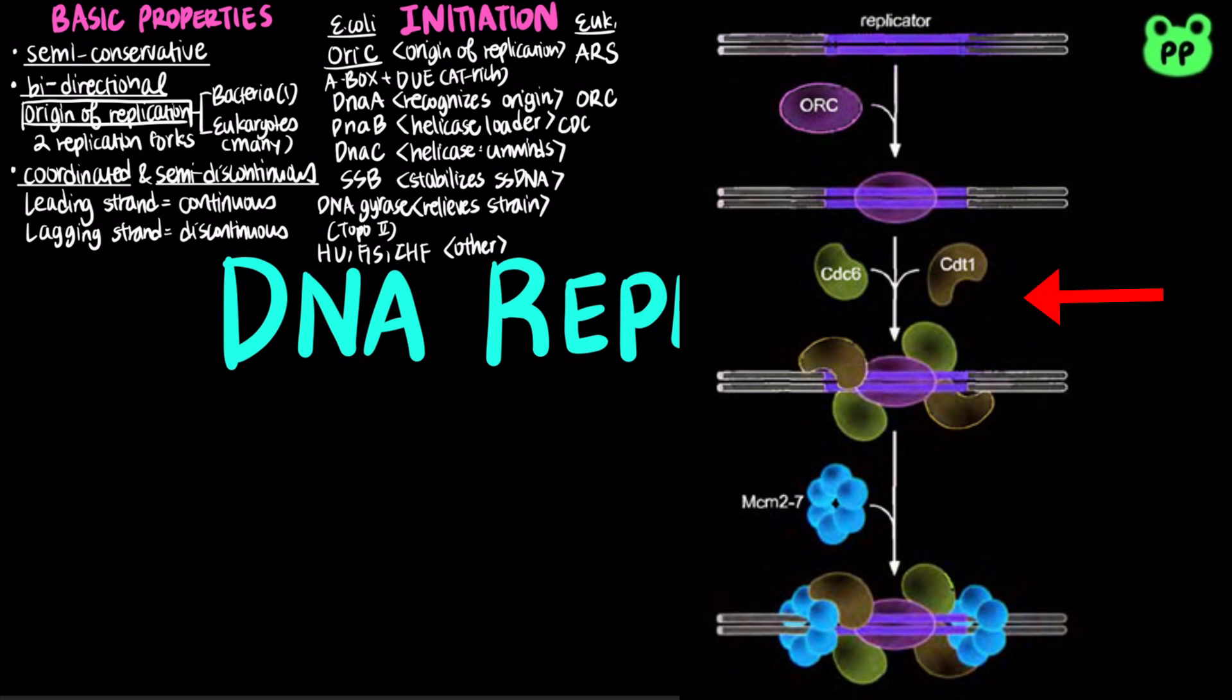Two proteins CDC6 and CDT1 then loads the mini-chromosome maintenance proteins MCM2-7 onto DNA strands. The MCM2-7 proteins are the helicase in eukaryotic replication. RPA or replication protein A functions as single-strand binding proteins to stabilize separated strands. DNA topoisomerase 1 helps relieve the torsional strain induced ahead of replication fork.